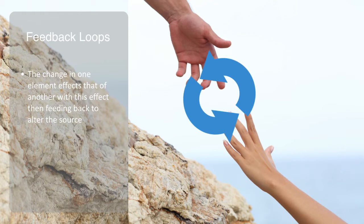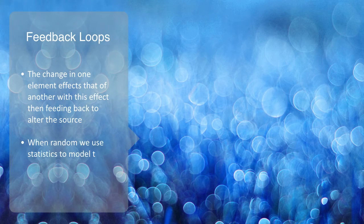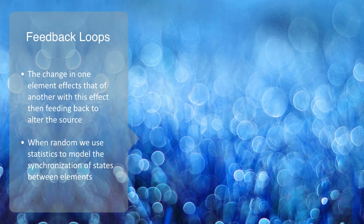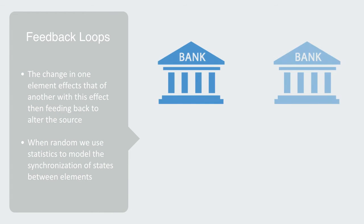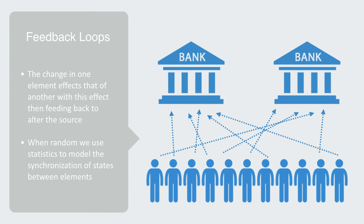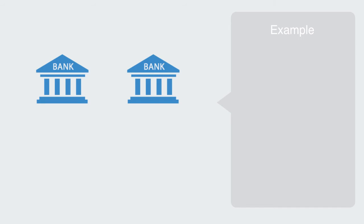When the state of elements within a system is independent from each other, then we can use statistics to model the synchronization of states between elements. For example, say we have a hundred people in a town with just two banks, A and B. If all other things are equal, we can model whether two people are customers of the same bank using simple statistics, where approximately 50% of the people will be using any one of the banks. But if the usage of each bank is not independent but instead interdependent, then it will no longer simply be statistics governing the dynamics — it will now be these feedback loops of interdependencies.